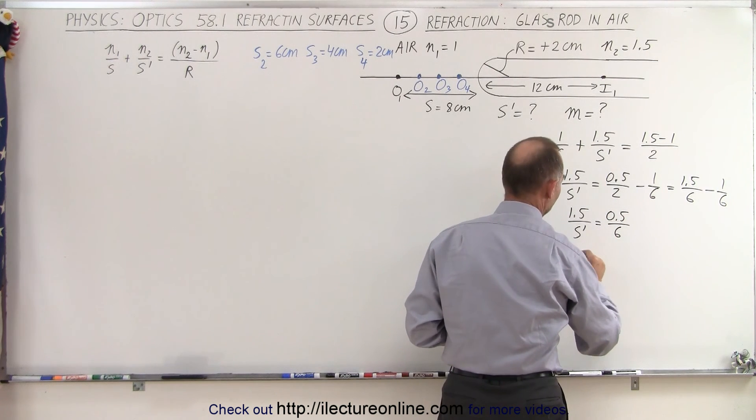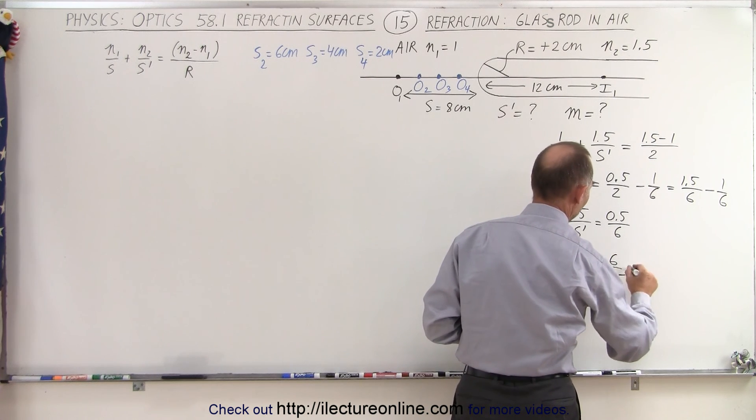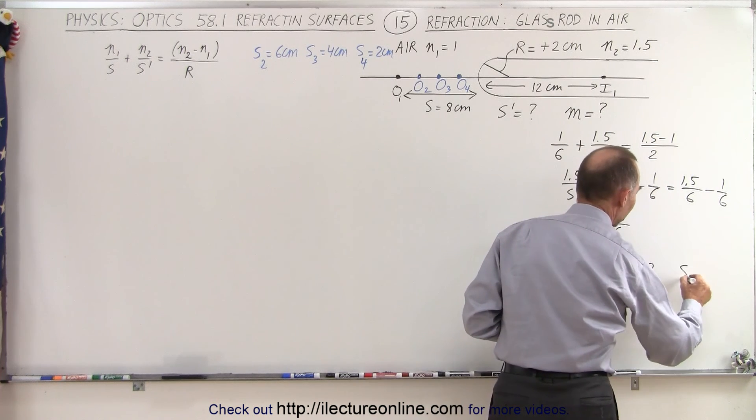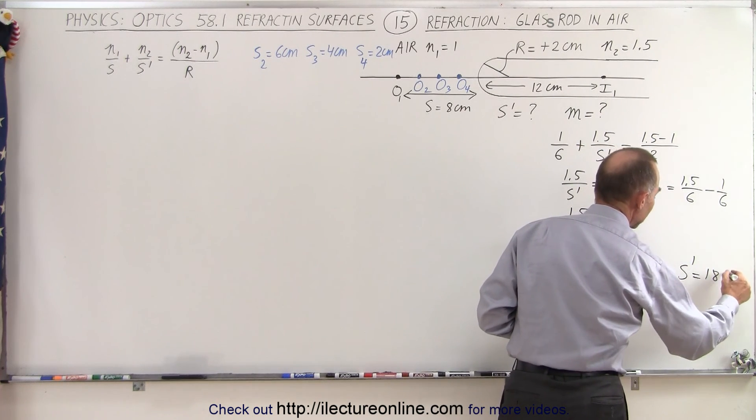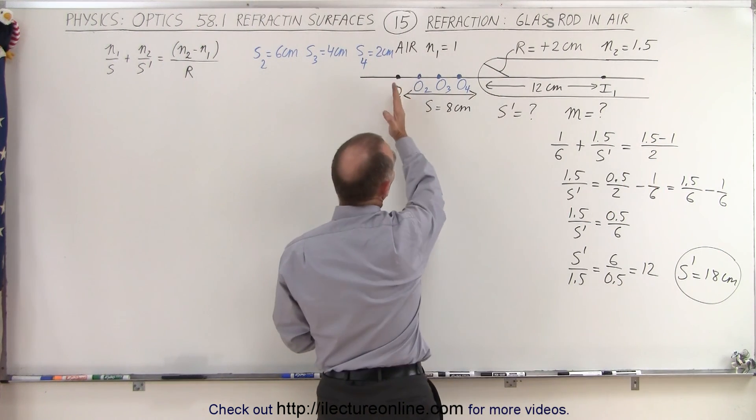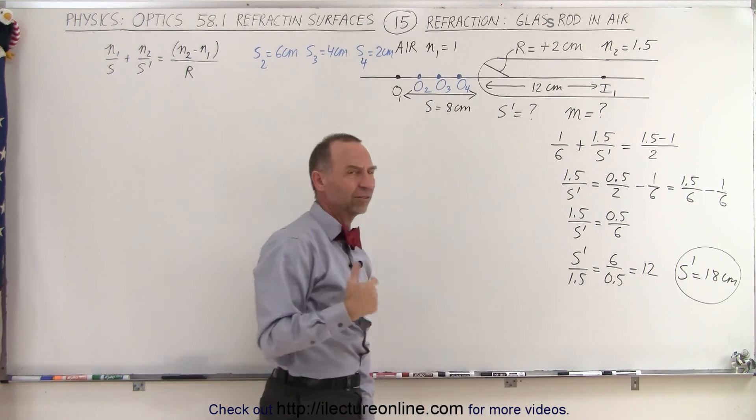Or s prime over 1.5 is equal to 6 over 0.5, which is equal to 12. And 1.5 times that means that s prime is equal to 18 centimeters. So notice, when we move the object closer to the boundary, the image moves farther to the right. Let's see if that continues.